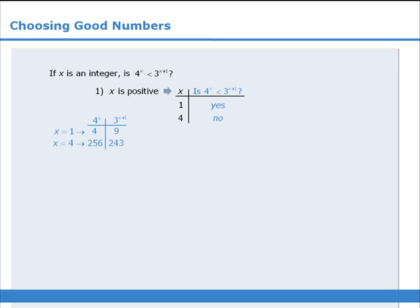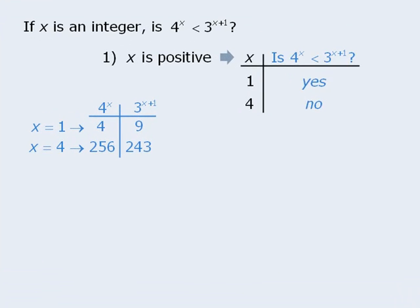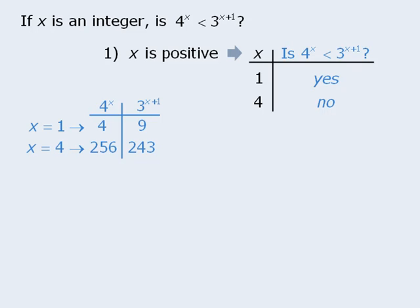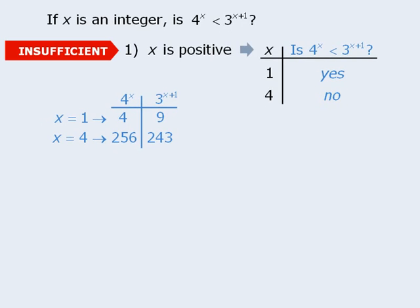In the last lesson, we examined the table method, which can be used to organize results when testing the sufficiency of a statement. We solved a question where when x equals 1, the answer to the target question is yes, and when x equals 4, the answer is no. Since we were unable to definitively answer the target question, we correctly concluded that statement 1 is not sufficient. The table method is useful for demonstrating that a statement is not sufficient.